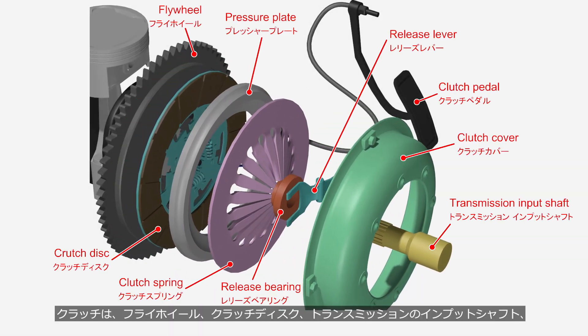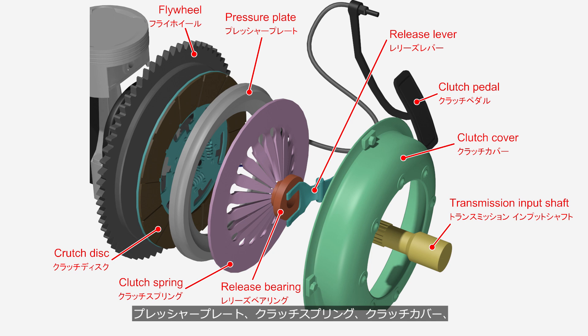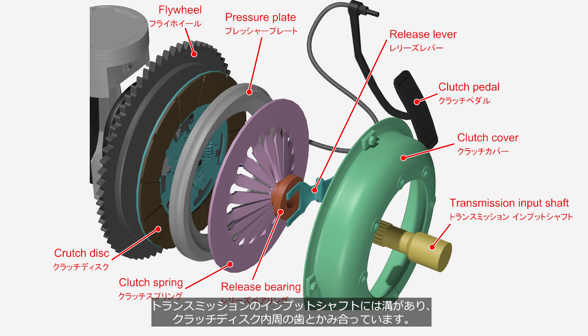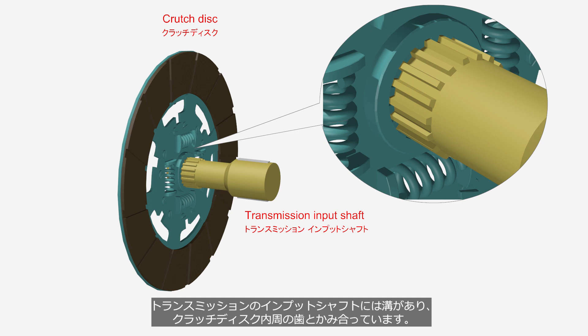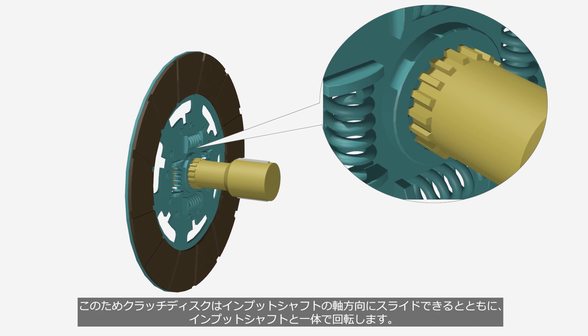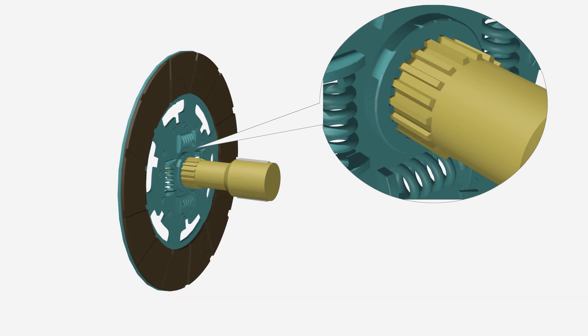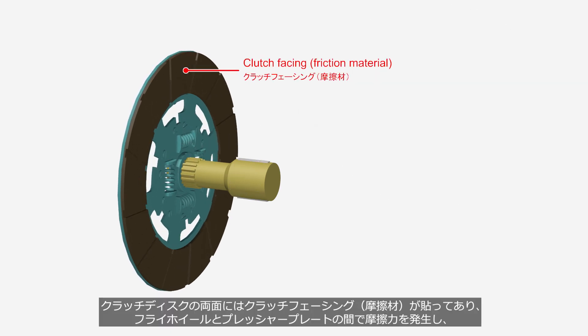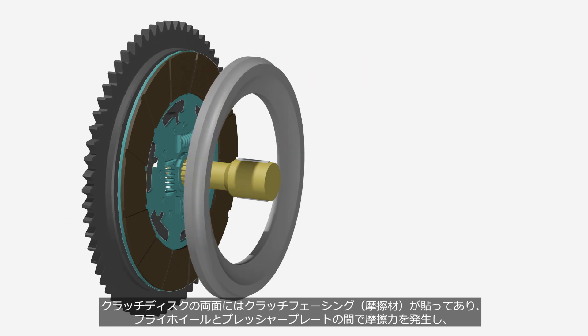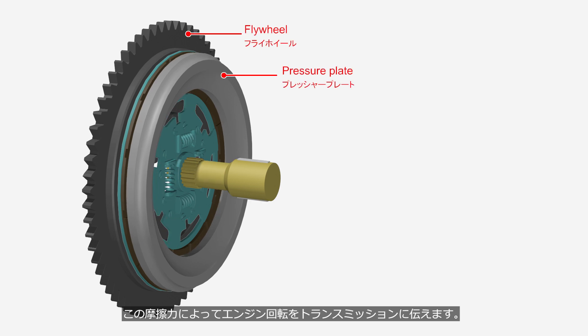A clutch consists of: a flywheel, clutch disc, transmission input shaft, pressure plate, clutch spring, clutch cover, release bearing, release lever, and clutch pedal. The input shaft of the transmission has grooves that mesh with the teeth on the inner circumference of the clutch disc. Therefore, the clutch disc can slide along the axial direction of the input shaft and rotate together with the input shaft. On both sides of the clutch disc, there is a friction material called clutch facing, which generates frictional force between the flywheel and pressure plate. This frictional force transmits engine rotation to the transmission.